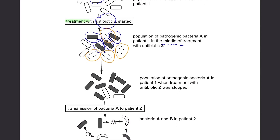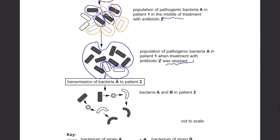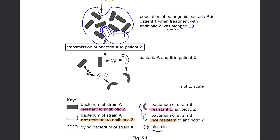When they stopped treatment with antibiotic Z, you can see there are much more bacteria resistant to antibiotic Z, and the ones not resistant have diminished in their numbers. After using antibiotic Z as a treatment, the resistant bacteria multiplied but the non-resistant ones reduced. Then this bacteria was transmitted to patient 2. To do that, they took out the plasmid of the bacteria resistant to antibiotic Z, and then the bacterium strain that was not resistant to antibiotic Z became resistant in the end.